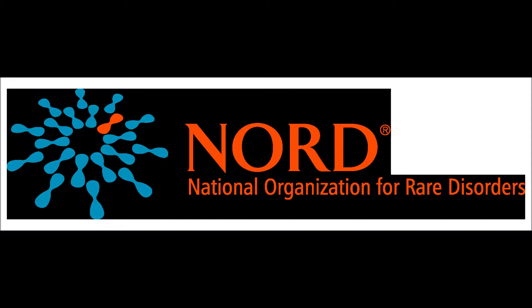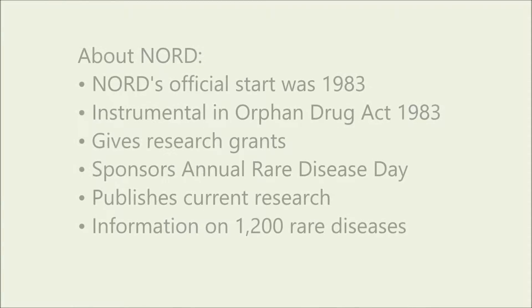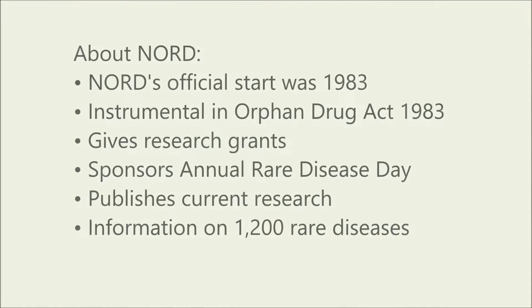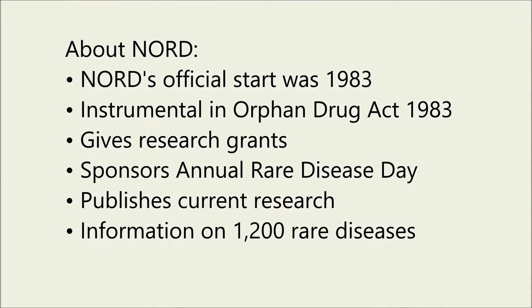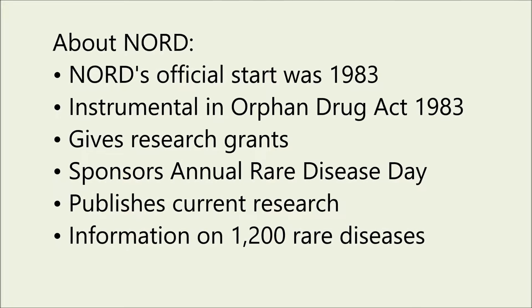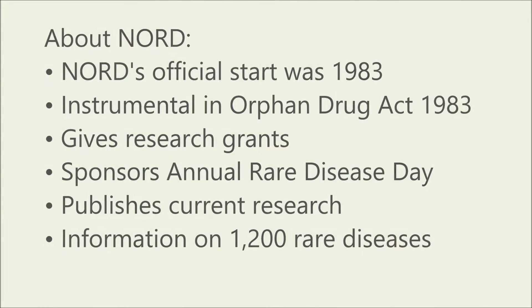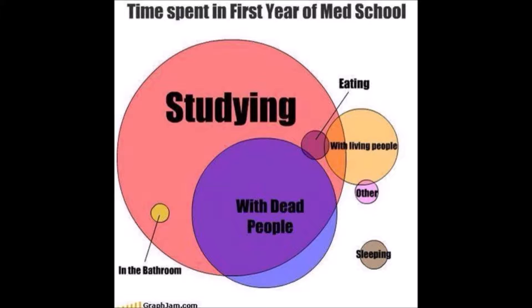Hello, all. Today we're here to learn about the NORD site. NORD is the National Organization for Rare Disorders. The URL for the site is rarediseases.org. The NORD organization was started in 1983 and up to today has been a spokesperson and research base for currently 1,200 rare diseases.